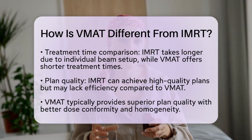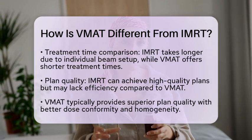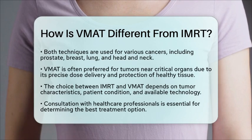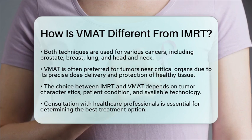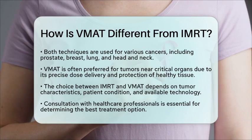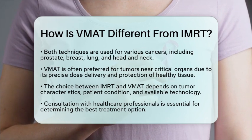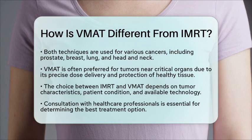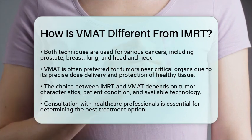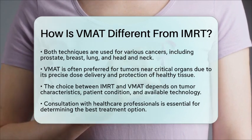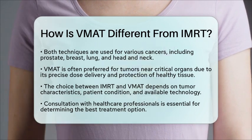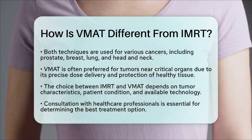Both IEMRT and VMAT are used for various cancers, including prostate, breast, lung, and head and neck cancers. However, VMAT is often preferred for tumors that are adjacent to critical organs due to its ability to deliver precise doses while protecting healthy tissue.